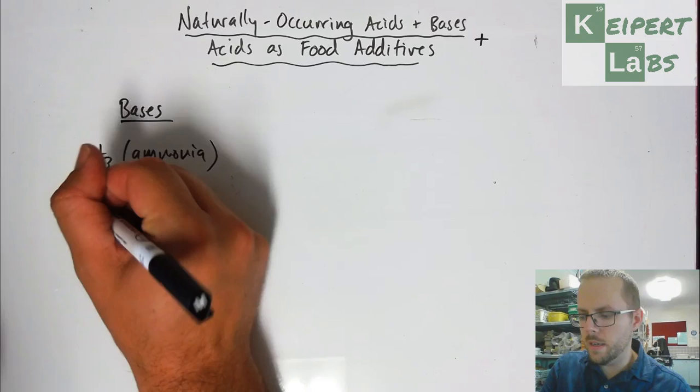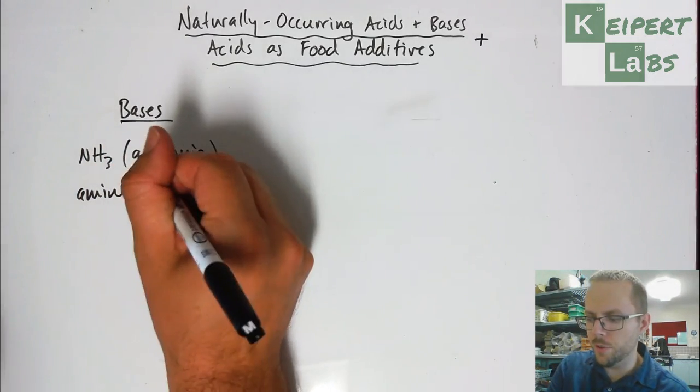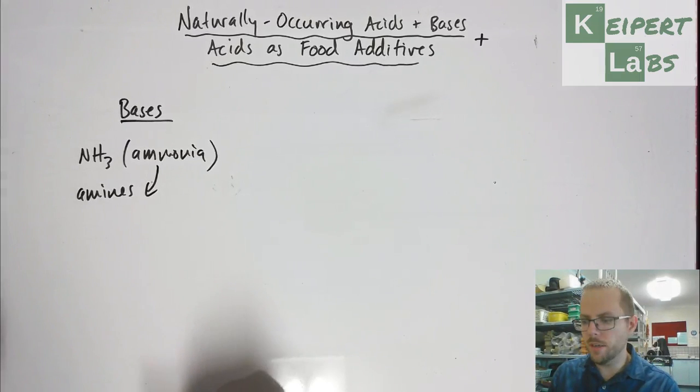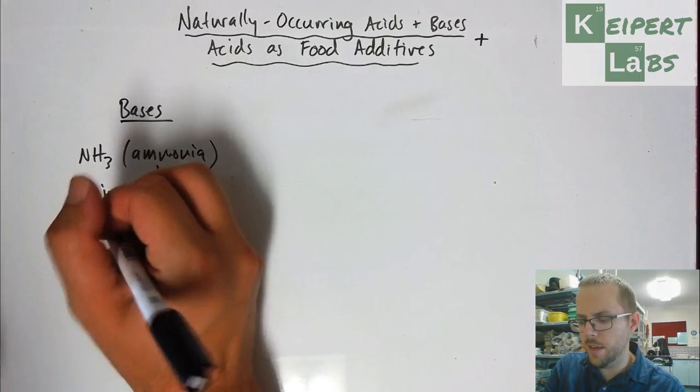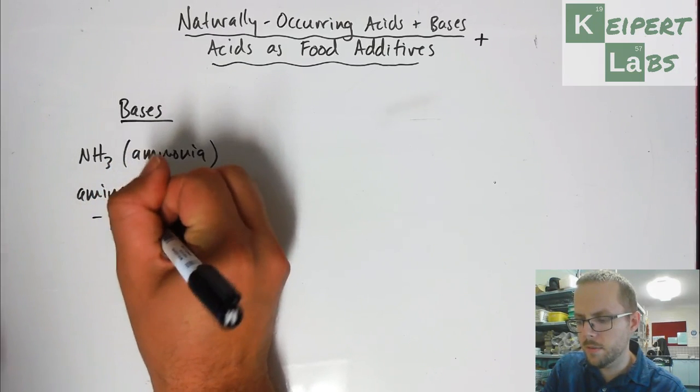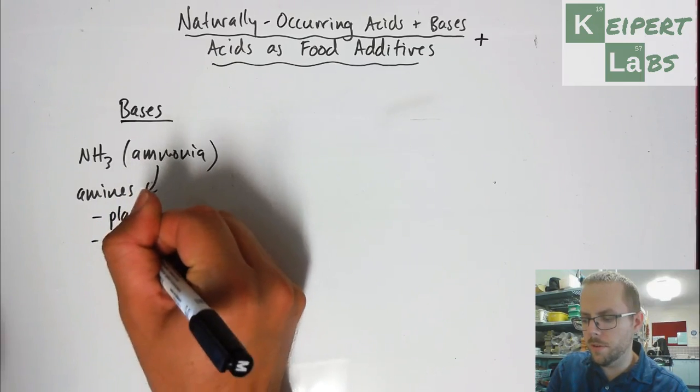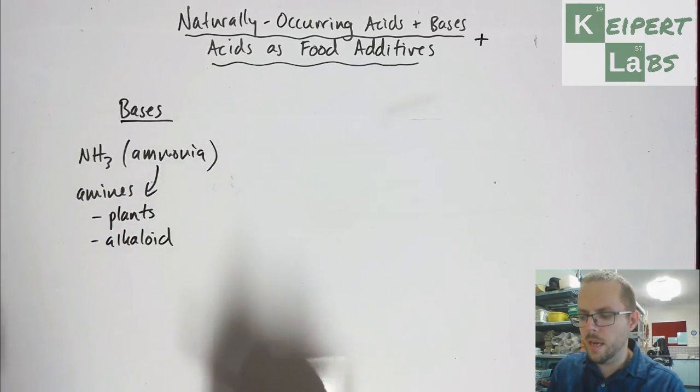Then what we've got is a family of compound called amines, which are related or derivatives of ammonia. And so they're present inside lots of, say, plants. We call them alkaloid compounds, alkaloids.